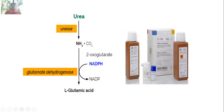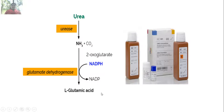The urea kit is available in the market. The mechanism of the reaction is: urea is converted into ammonia and carbon dioxide by the action of urease, and this ammonia is converted into glutamic acid — the amino group is transferred to oxaloglutarate to form glutamic acid — by the enzyme glutamate dehydrogenase.